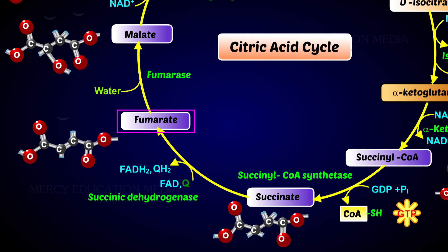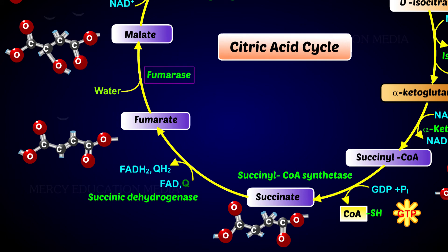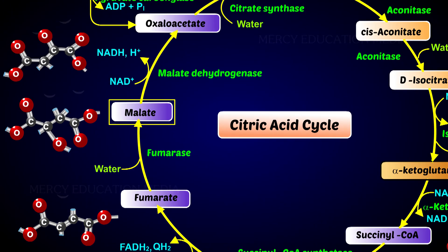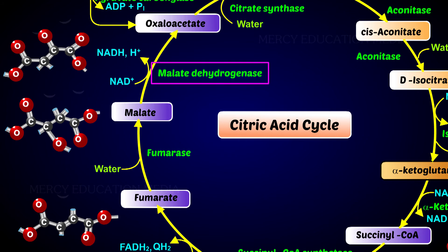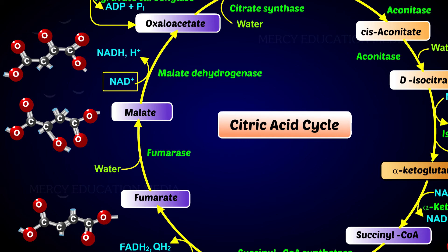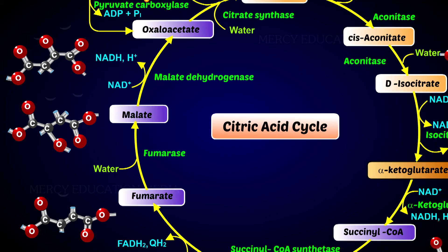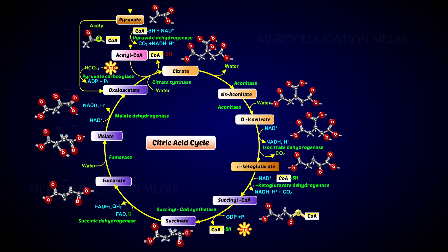The fumaric acid is converted to malic acid by the addition of a molecule of water. This reaction is catalyzed by fumarase. The malic acid is oxidized to oxaloacetic acid by the enzyme malic dehydrogenase. Here, NAD+ is reduced to NADH2.